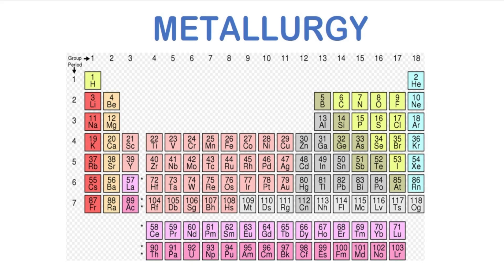This classification is based on the physical and chemical properties of elements. Normally metals are lustrous or shiny, malleable, and ductile. They are good conductors of heat and electricity. Besides this, metals are electropositive — that is, they have the tendency to lose electrons and acquire a positive charge.